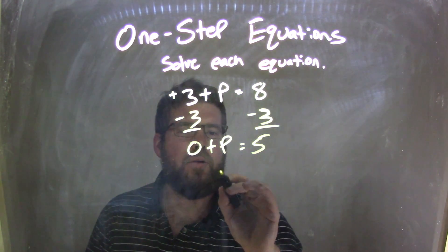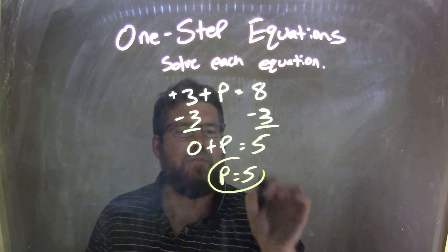And so we don't need the 0 there, and we're left with just p equals 5, our final answer.